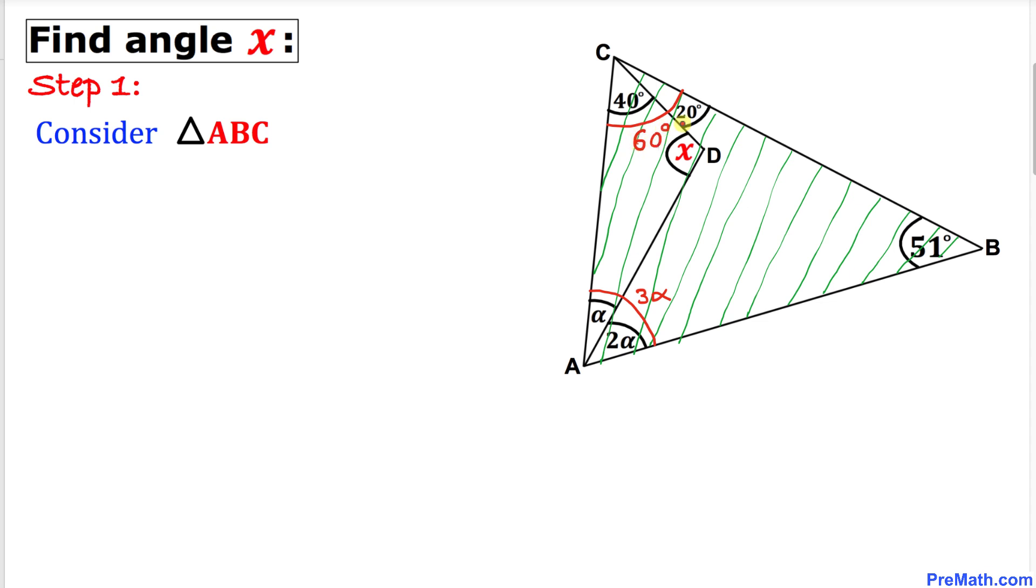Now we know that the sum of angles in any triangle is equal to 180 degrees. So let's add all these three angles: 3 alpha plus 51 degrees plus 60 degrees equals 180 degrees. So 3 alpha plus 111 degrees equals 180 degrees.